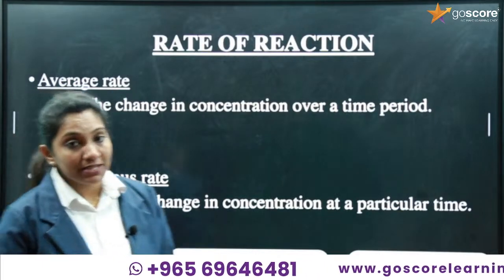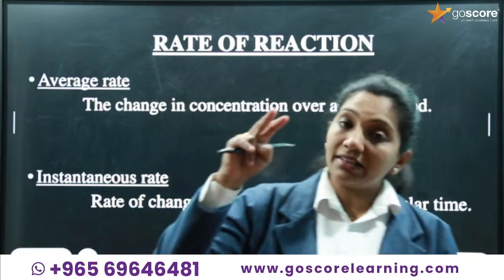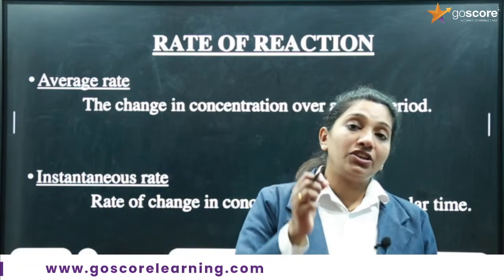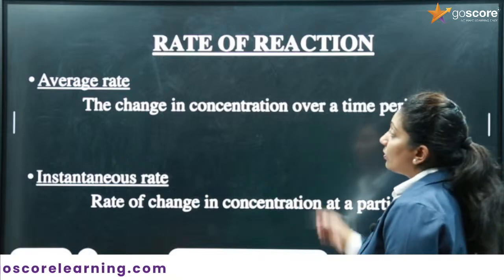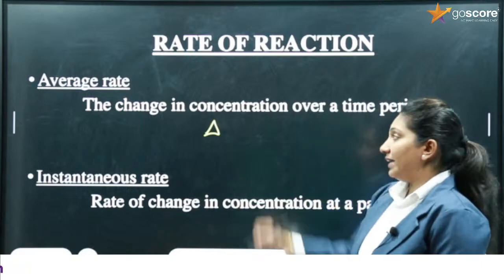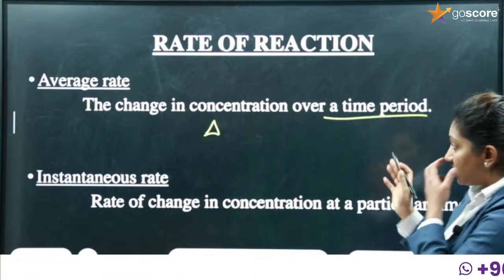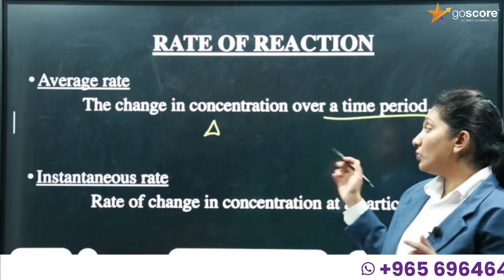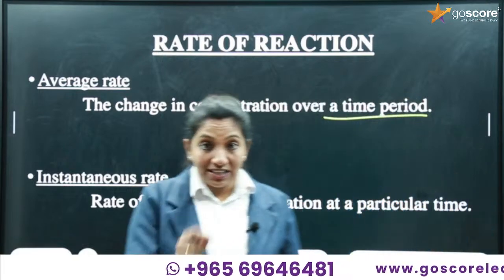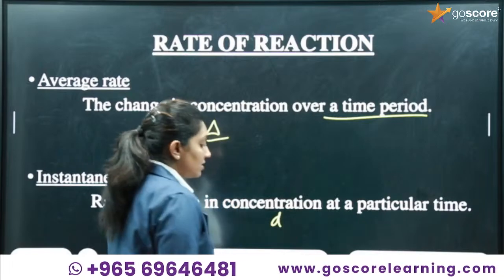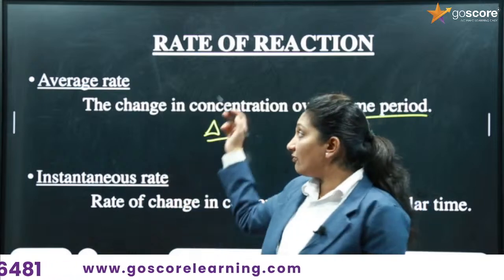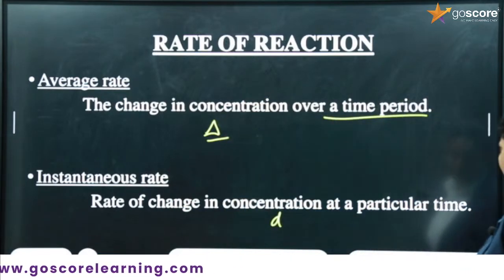The rate of a reaction can be expressed in two ways: average rate — for a particular period of time, using the delta symbol for changes; and instantaneous rate — the rate at a particular instant, using differential notation (d) for very small changes.